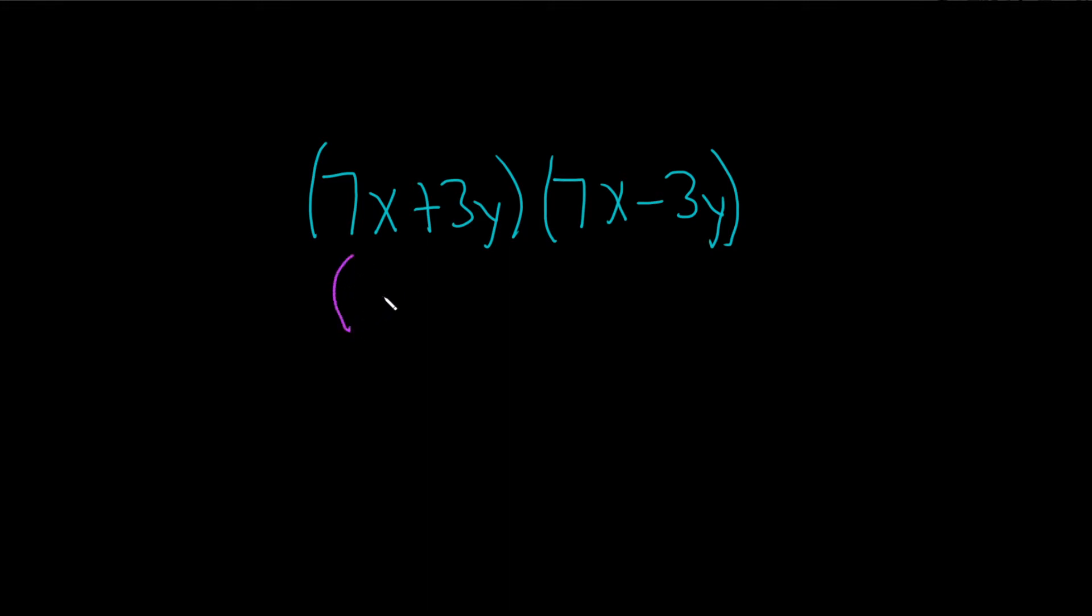We can think of this as a plus b times a minus b. This is called the difference of squares formula.